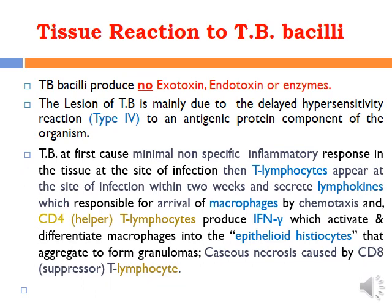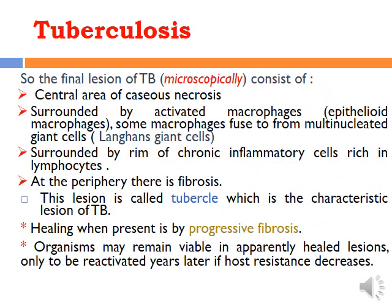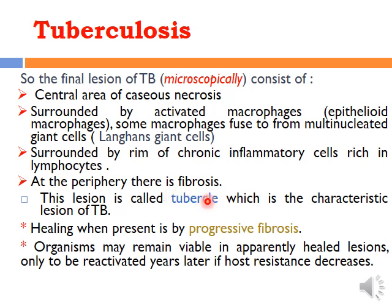The details of granuloma formation: microscopically, the granuloma is formed of a central area of caseous necrosis, followed by a rim of epithelioid macrophages, which sometimes fuse to form Langhans giant cells, and then an outer rim of activated T lymphocytes. When the granuloma becomes a chronic lesion over a long period of time, it is usually surrounded by fibrosis. This structure is also called a tubercle.